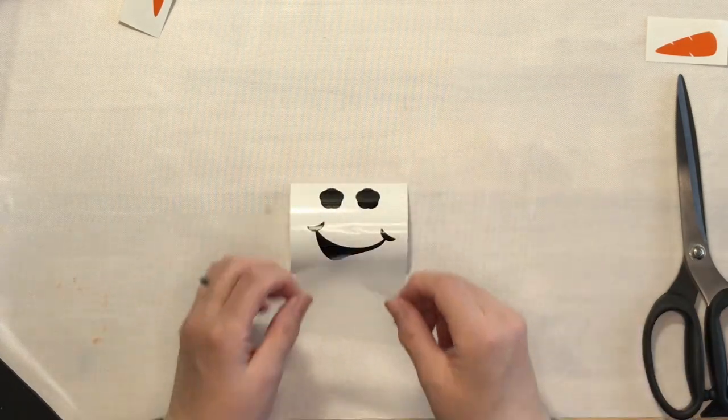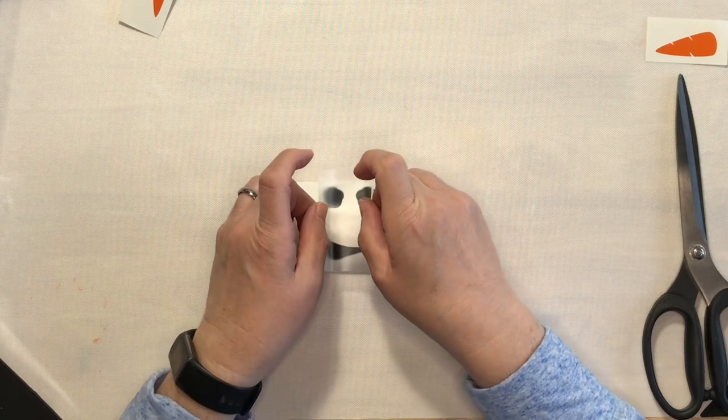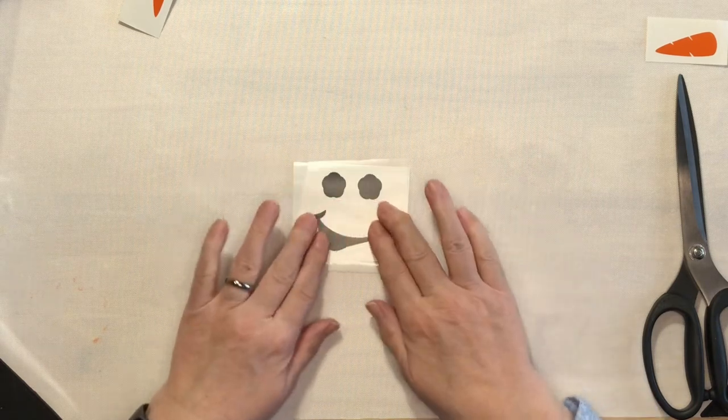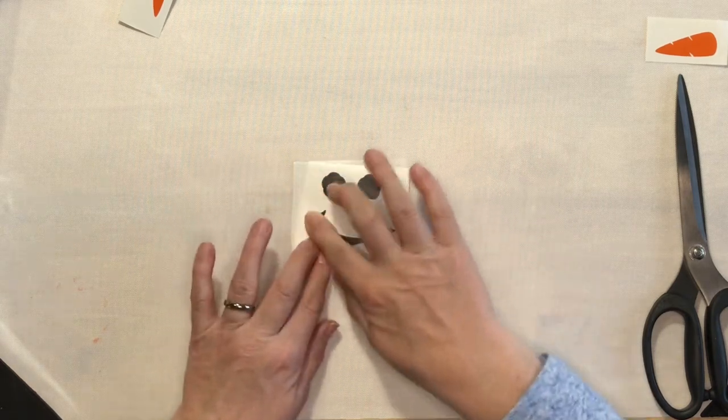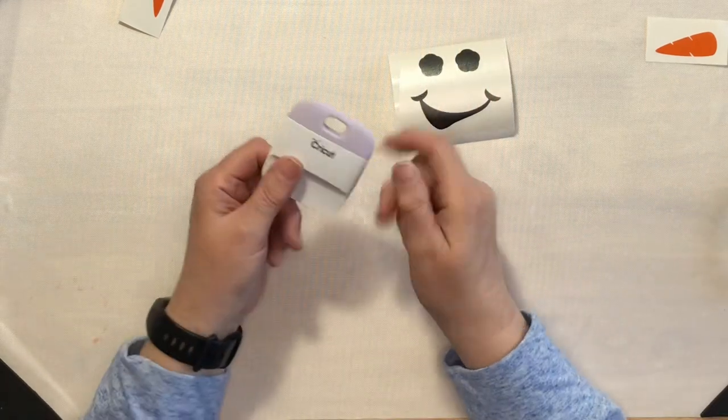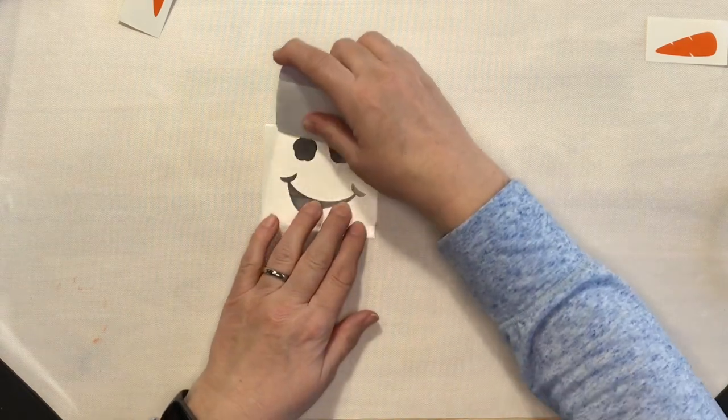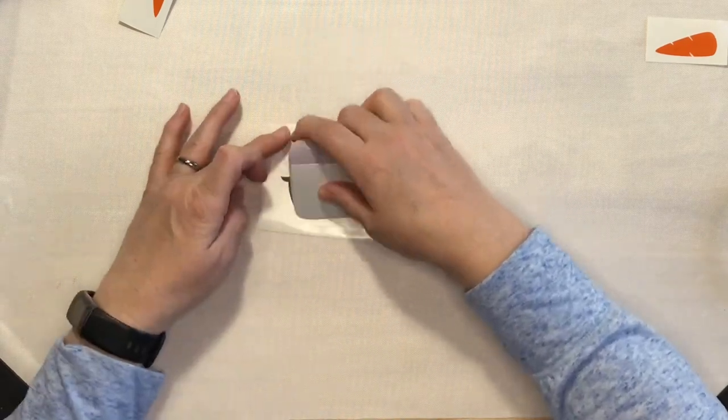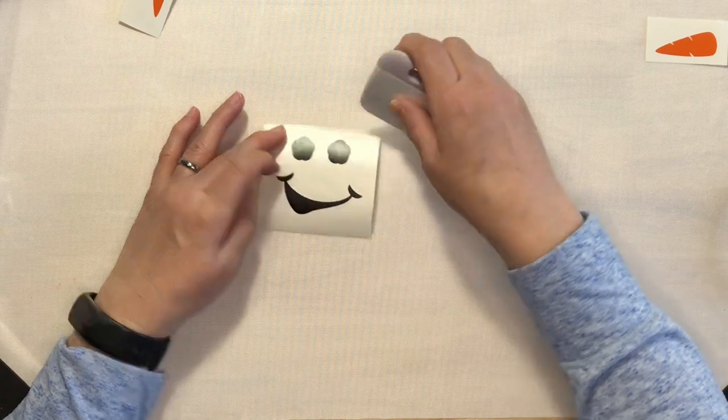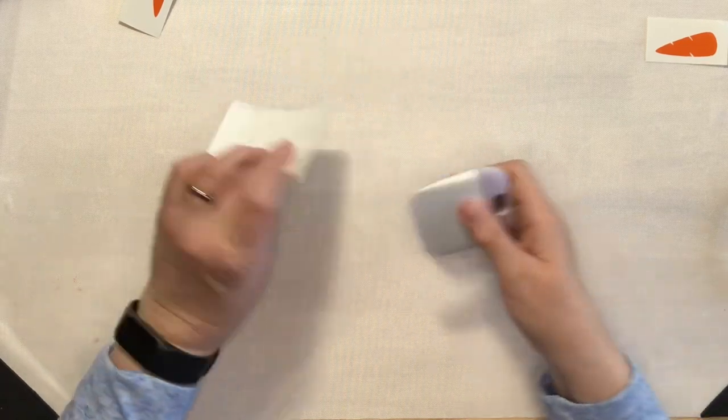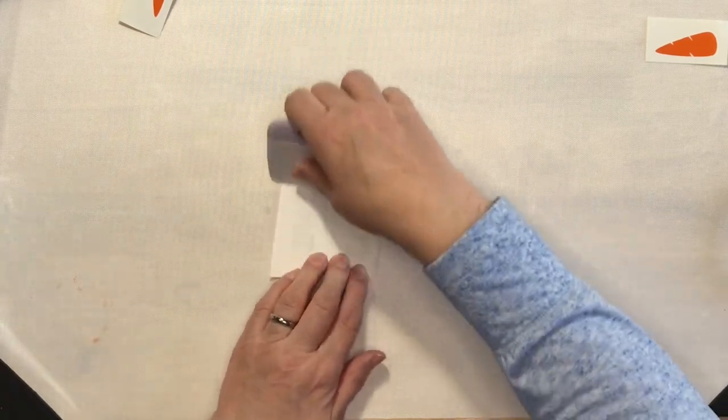So let's go ahead and do the taco method and lay that over. And because we're working on a small project, I'm just going to use my little Cricut scraper. And I will burnish that well and turn it over and burnish the other side.